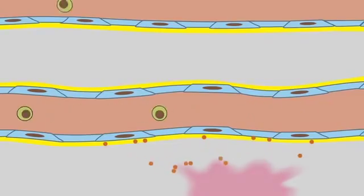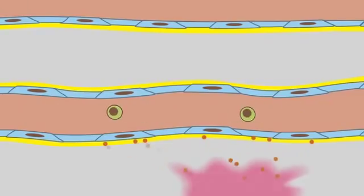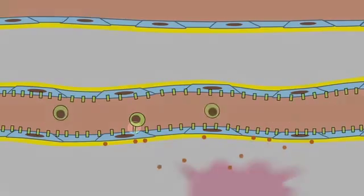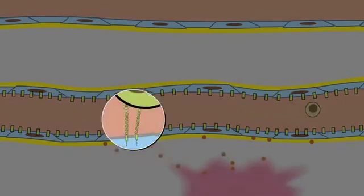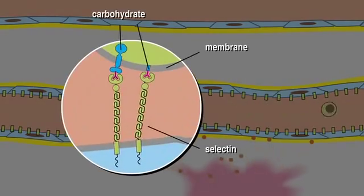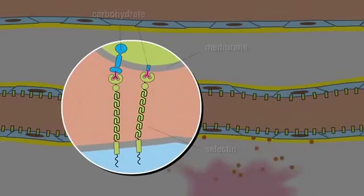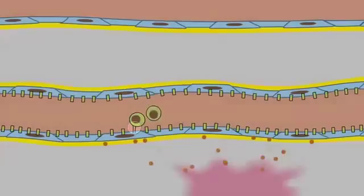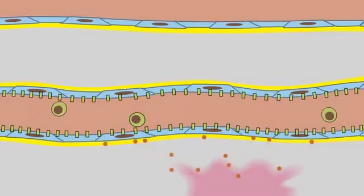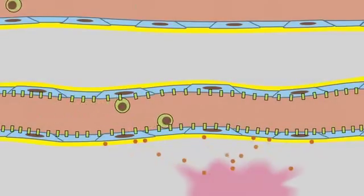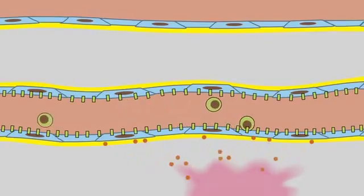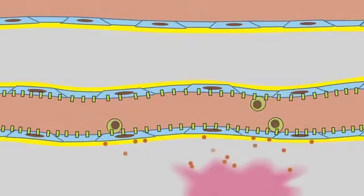The endothelial cells then express surface proteins called selectins. Selectins bind to carbohydrates displayed on the membrane of the leukocytes, causing them to stick to the walls of the blood vessels. This binding interaction is of sufficiently low affinity that the leukocytes can literally roll along the vessel walls in search for points to exit the vessel.